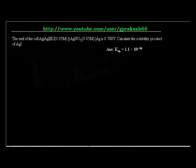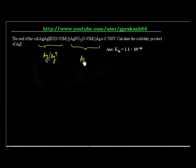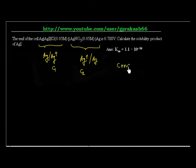This is basically an easy problem related to the concentration cell. You have an example of a concentration cell. On this side you have the reaction Ag to Ag+, and on this side also you have a reaction that is Ag+ to Ag. So this is the effective reaction. Only thing is, this side Ag+ concentration is C1 and this side concentration is C1. So this is an example of a concentration cell.